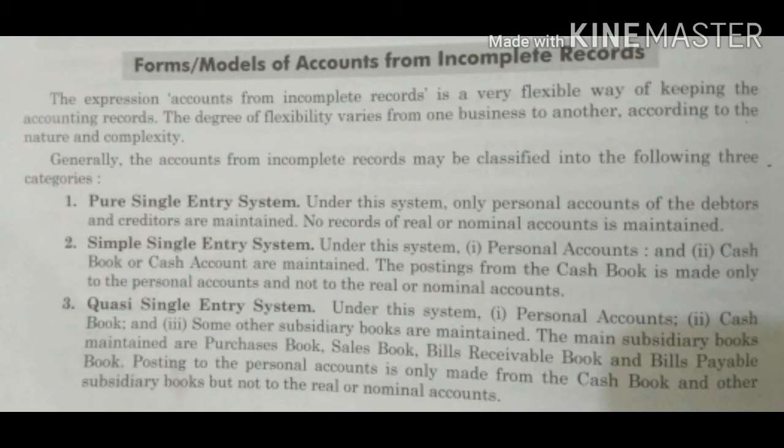Second is simple single entry system। Under this system personal accounts, cash book, and cash account are maintained। The posting of the cash book is made only to the personal account and not to the real or nominal account। Simple entry में personal account के साथ cash account और cash book भी बना लेते हैं। जो cash वाली transactions हमारे debtors और creditors से related हैं, उनमें हम post कर देते हैं। Still इसमें भी हम real और nominal account को follow नहीं करते।